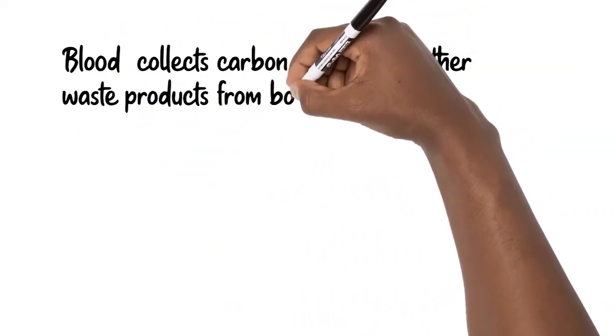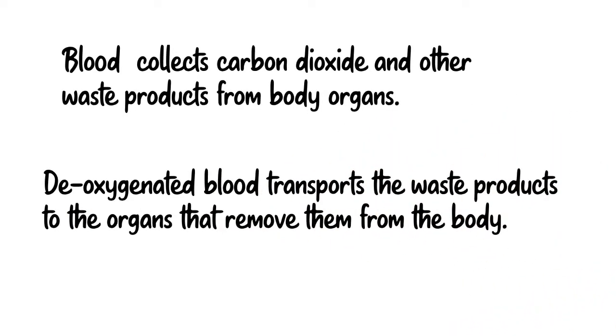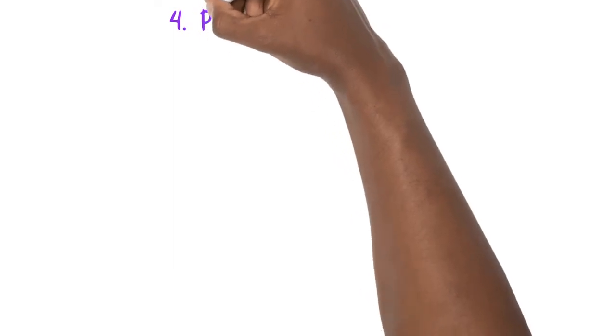Blood collects carbon dioxide and other waste products from body organs. Deoxygenated blood transports the waste products to the organs that remove them from the body.